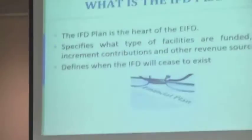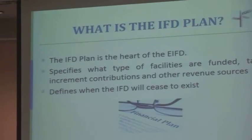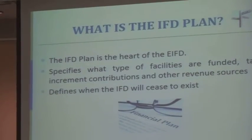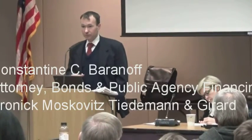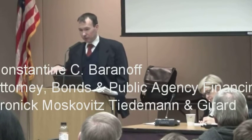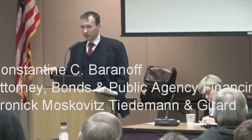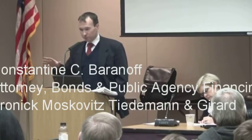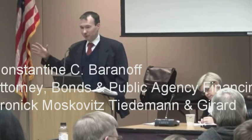The plan also defines when the EIFD is going to cease to exist. The statute states that the EIFD can exist up to 45 years from the date of approval by the voters of the issuance of bonds — and also approval of some loans. In theory, the EIFD can exist for much longer than 45 years if you delay or never ask your voters to approve bonds, so the EIFD can continue providing tax increment to fund different programs for a very long time.